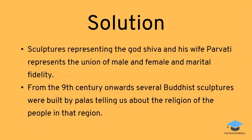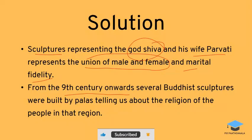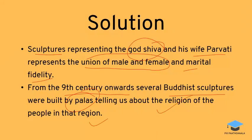The sculptures also represent God Shiva and Parvati — the union of male and female and marital fidelity — which is shown from the 9th century onwards. Several Buddhist sculptures built by the Palas tell us that at this time, Buddhism was the religion followed in this region.